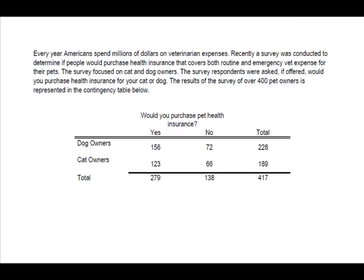Alright, so before we get started, just a quick reminder: when used for probability, each cell in a contingency table represents one joint event, which is the same thing as saying one joint response.